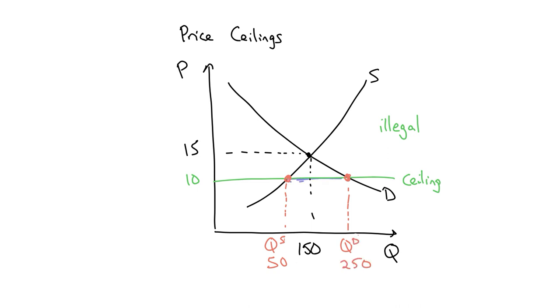So this is what we would call a shortage. And it's a shortage because the quantity demanded is greater than the quantity supplied. And the difference here is 200.